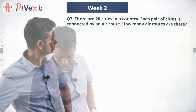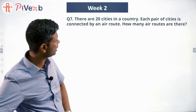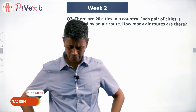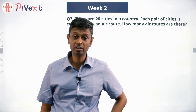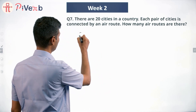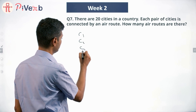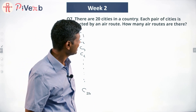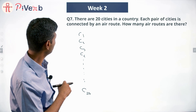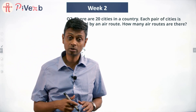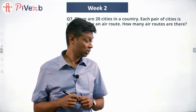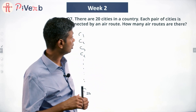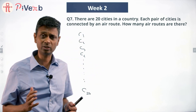Try this question: there are 20 cities in a country, and each pair of cities is connected by an air route. How many air routes are there? There are 20 cities, so I'll call them city 1, city 2, city 3, city 4, all the way to city 20. Each pair is connected by an air route — C1-C5, C2-C9, C19-C20, C16-C11. We want to count how many air routes there are. We cannot simply randomly write them down.